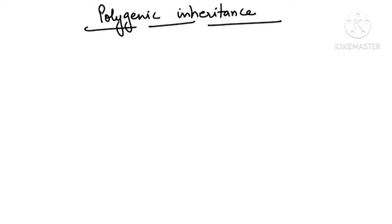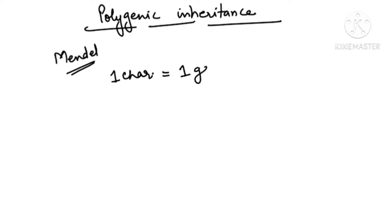Hello students, welcome back to the channel. In this video we are going to study about polygenic inheritance. Before we start, first understand what Mendel said: for one character there is one gene. Characters are controlled by factors, and factors are nothing but genes. This was Mendel's concept.